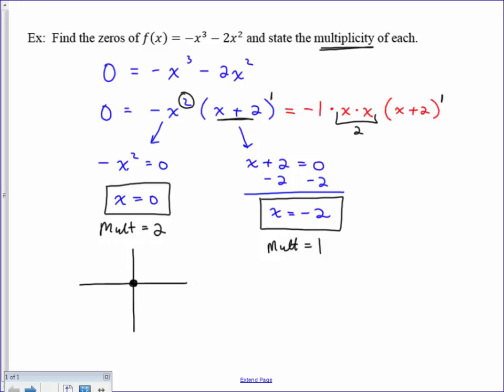So, having an even multiplicity means that the graph would turn around at 0. In other words, do something like this. It could do that, or depending on what the graph looked like, it could also do something like this, depending on which direction the graph is coming in at. But we're basically going to turn around at 0 if your multiplicity is even.